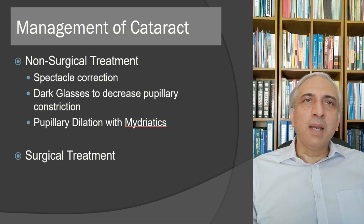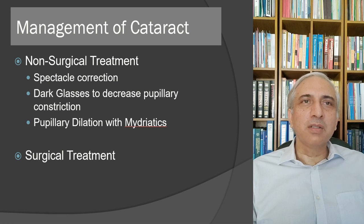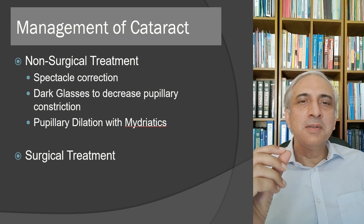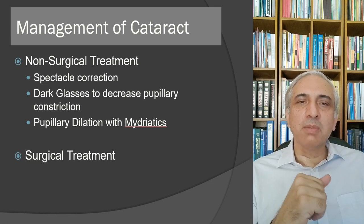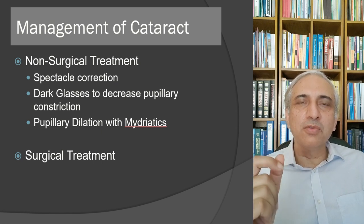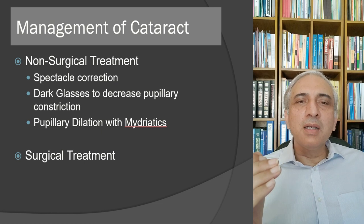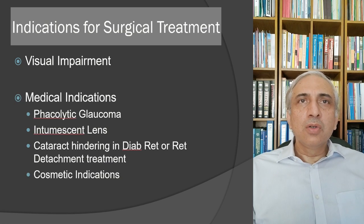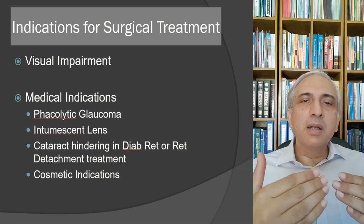Non-surgical management of cataract includes spectacle correction, dark glasses to reduce pupillary constriction, and mydriatic drops for pupillary dilation. For extracapsular cataract extraction, 6/18 vision was traditionally the threshold for surgery, but with phacoemulsification — due to its greatly improved predictability — 6/12 is now standard, and surgery can be performed at 6/9 if the patient's occupation demands it.